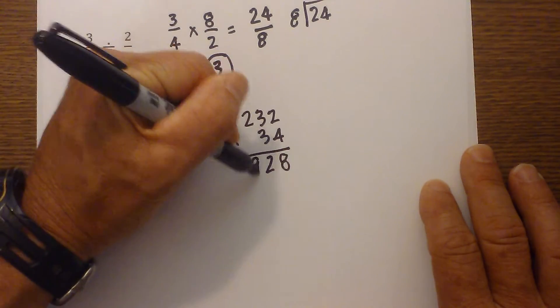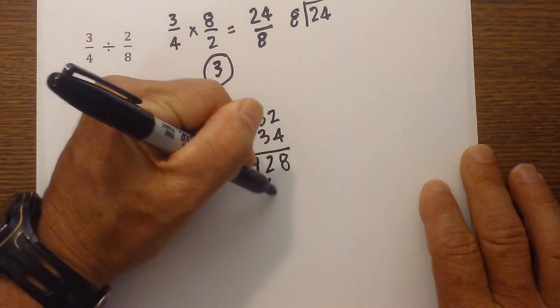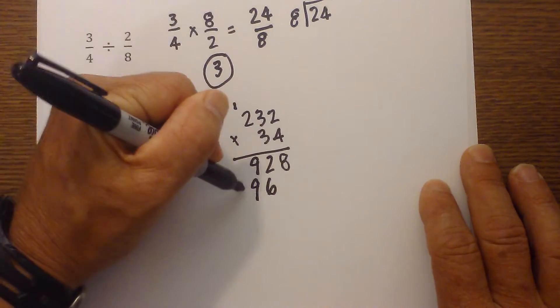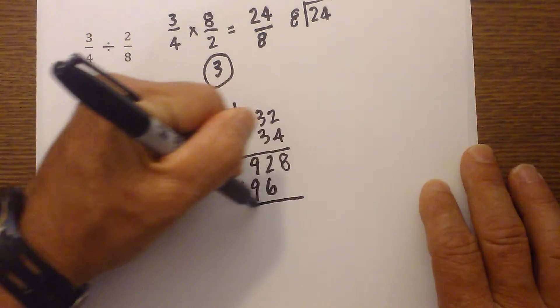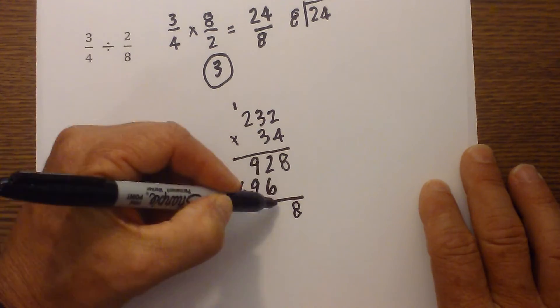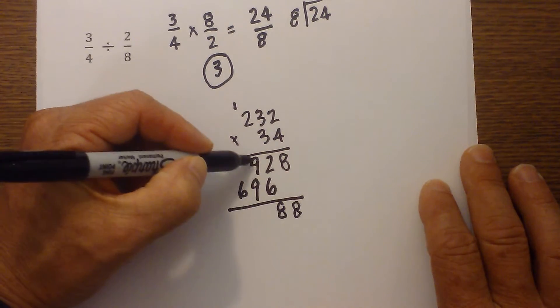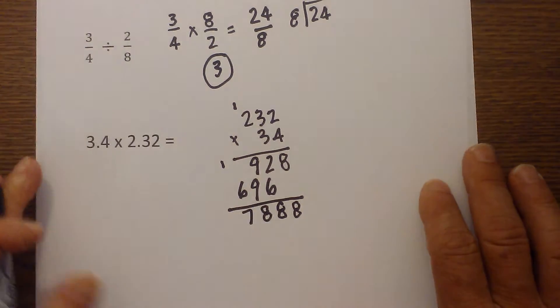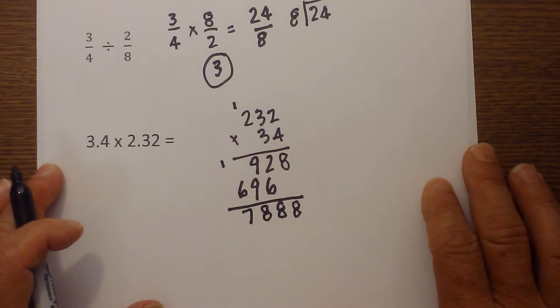That's 8 plus 1 is 9. Then 3 times 2 is 6, 3 times 3 is 9, and that is 6 again. Now bring down the 8. Add 6 plus 2 is 8. 9 plus 9 is 18, carry the 1. That's 7. So now we have 7.7888.